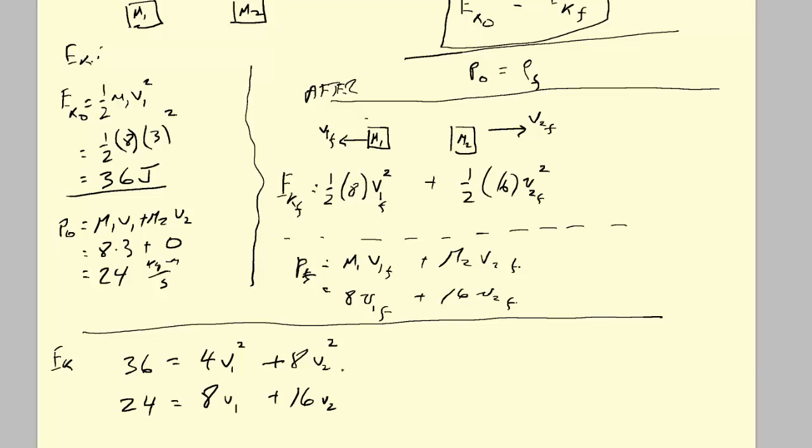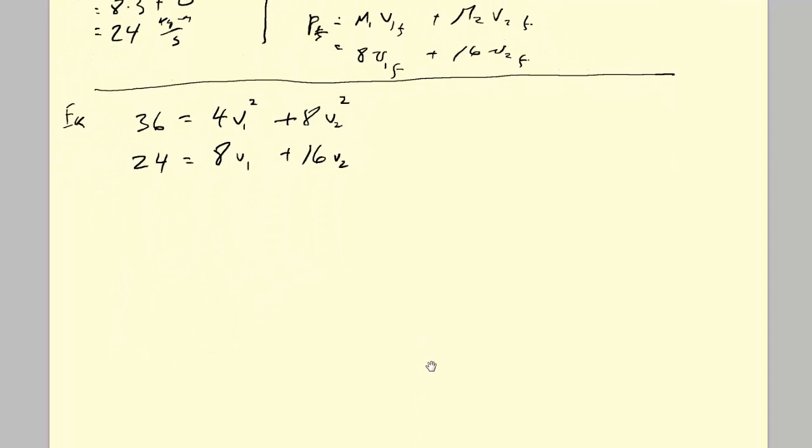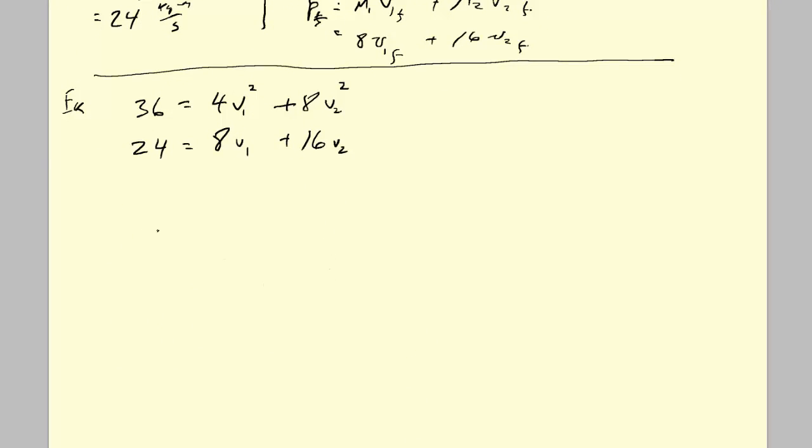Well, this problem is rigged. Probably many of the questions will be rigged so that it's not so terrifying to do the calculation. We'll notice that every constant can be divided by 4. So we get 9 equals V1 squared plus 2 V2 squared. And here, everything can be divided by 8, so we get 3 equals V1 plus 2 V2.